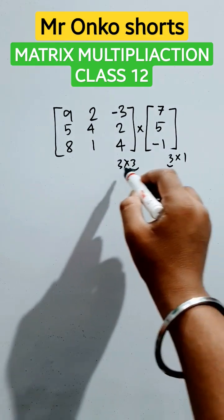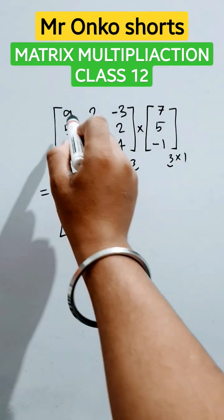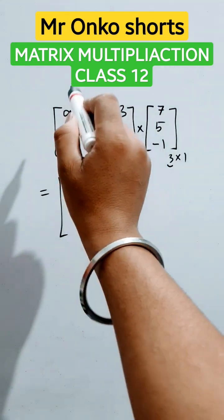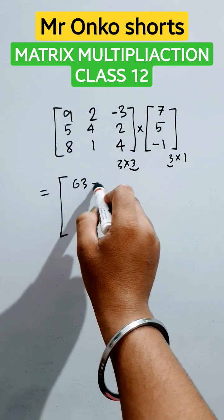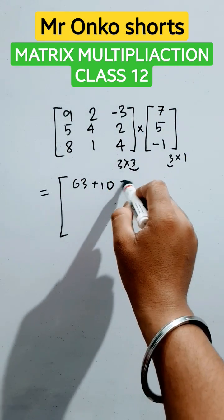If we omit these two, then the answer will be of 3 cross 1 order. Now, how to solve this? Let's see. This row will be multiplied by this column. So, 9 into 7 that is 63 plus 2 into 5 that is 10 plus minus 3 into minus 1 that is 3.